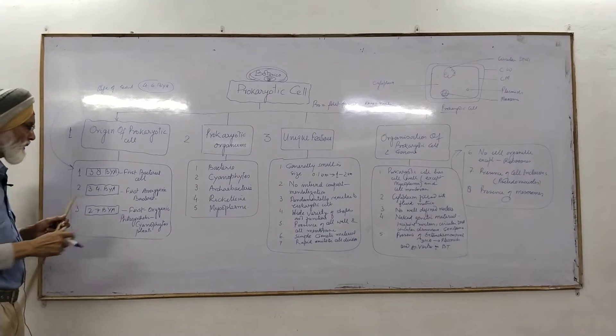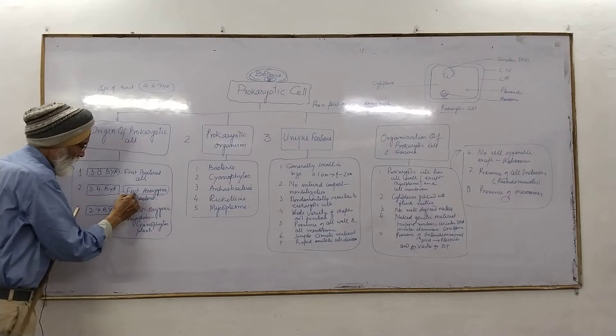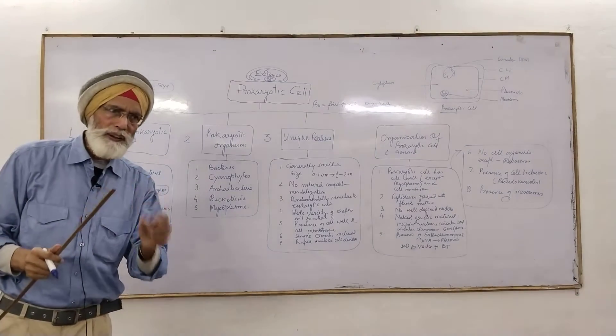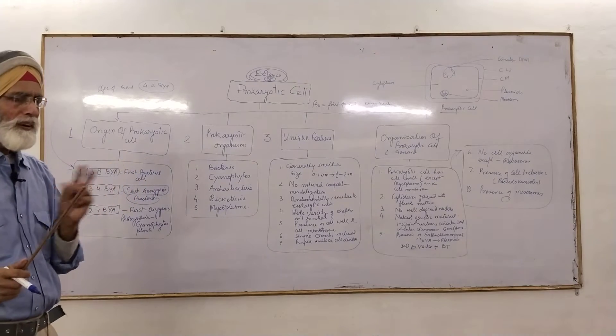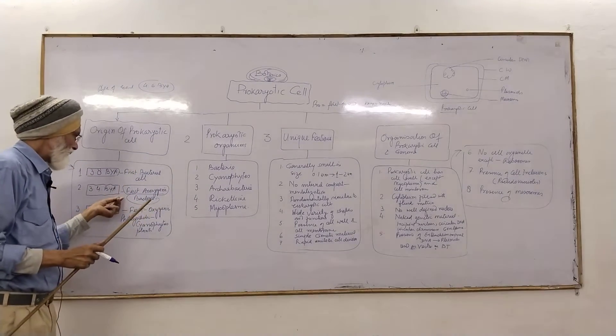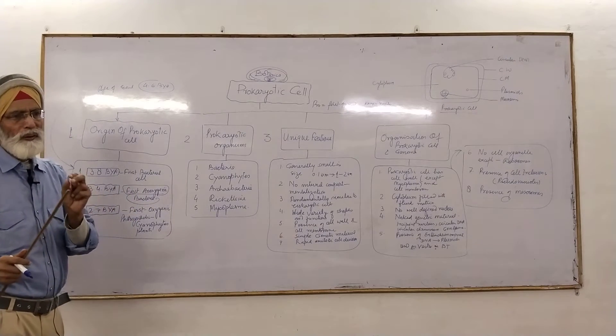To have the first anoxygenic bacteria. Those bacteria which were able to survive in the absence of the oxygen. There was no oxygen at all. Such anoxygenic bacteria, they survived only on the basis of dead organic matter.